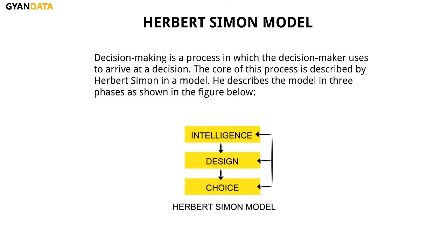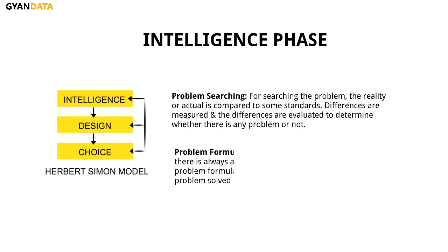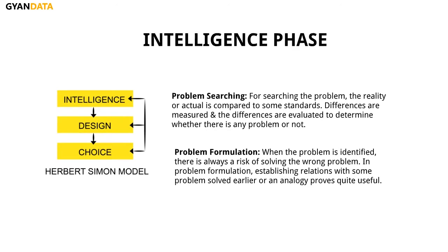Talking about the intelligence phase, this is the first step towards the decision making process. In this step, the decision makers identify or detect the problem or opportunity. A problem in a managerial context is detecting anything that is not according to the plan, rule or standard. An example of a problem is the detection of a sudden high attrition risk for the present month by an HR manager.